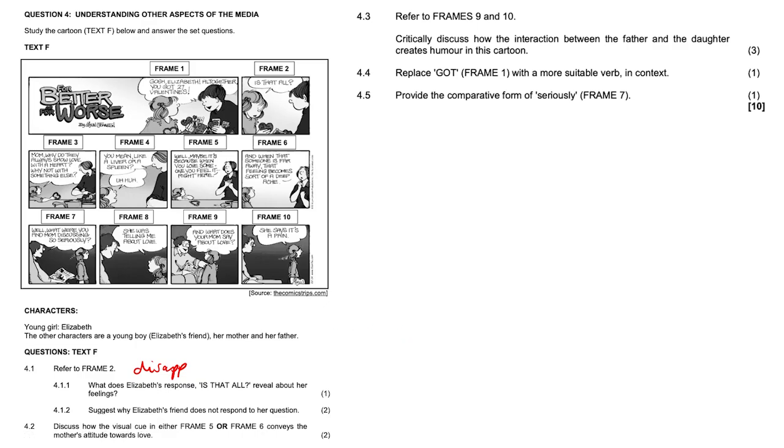4.2, discuss how the visual clue in either frame 5 or frame 6 conveys the mother's attitude toward love. Well, as you can see here, the mother places her hand on her chair, she leans forward and she's smiling, expressing her very romantic view of love. So it's something that she cares about deeply, it's meaningful. She's trying to give her daughter a bit of a life lesson here.